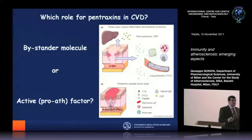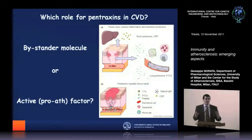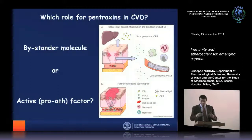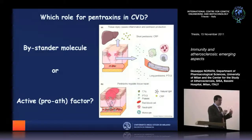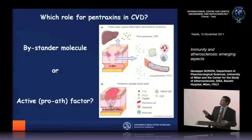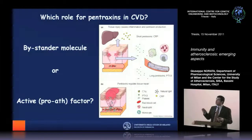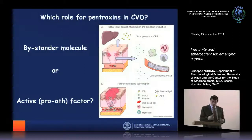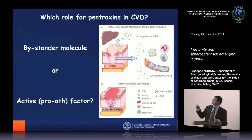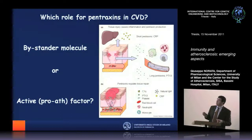What are pentraxins? As I mentioned, pentraxins are acute phase proteins — proteins that are increased following any type of injury in an acute fashion. In the context of vascular disorders and atherosclerosis, when you have damage to a vessel, the tissue secretes molecules such as chemokines. IL-6 is one of those, which goes to the liver; the liver then immediately secretes short pentraxins. The most famous is C-reactive protein, CRP.